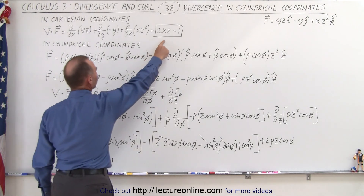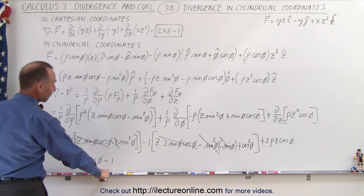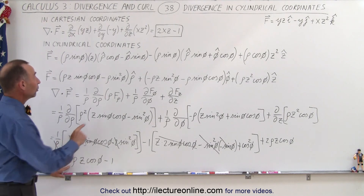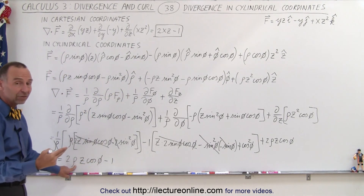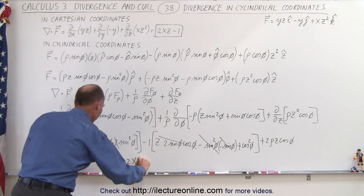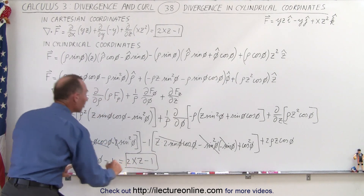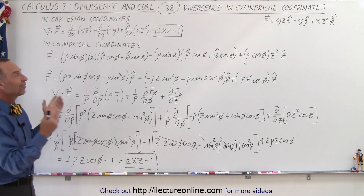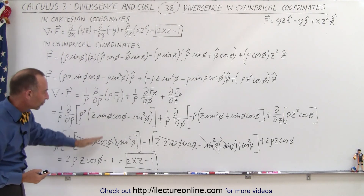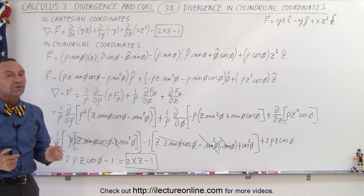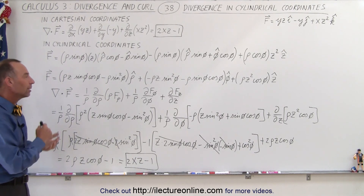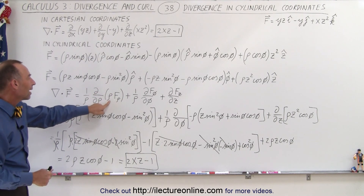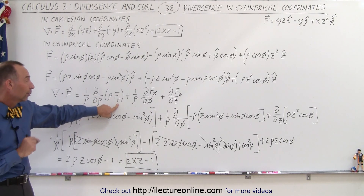So do we have the same result as before? Almost — we have the minus 1 that matches, and the z is there, but what about 2 rho cosine of phi? Well, the 2 is there, and rho times cosine of phi equals x, so this translates to 2xz minus 1, which is exactly the same result we got when we used Cartesian coordinates to find the divergence. Obviously in a case like this you would never want to convert to cylindrical coordinates and go through all this work, because it's much easier in Cartesian coordinates. But it's nice to see an example of how it can be done and what order of operations we have to use — specifically the 1 over rho times the partial derivative of rho times f sub rho, the rho component of f.